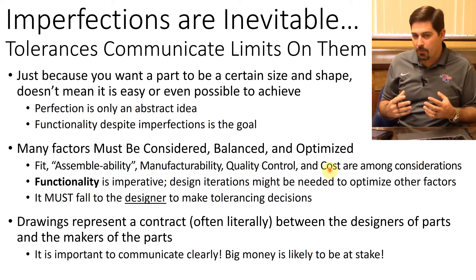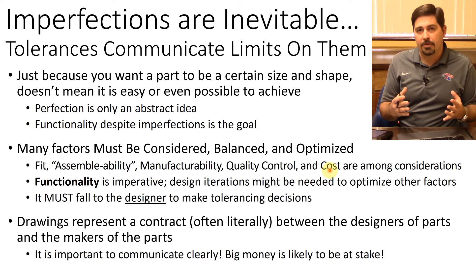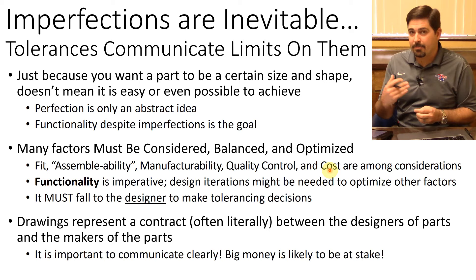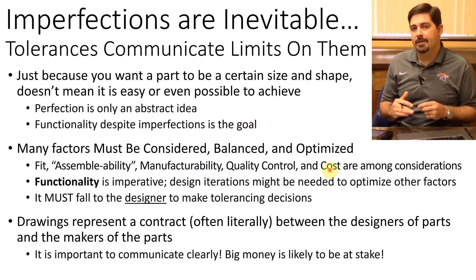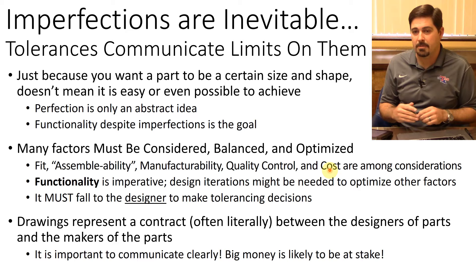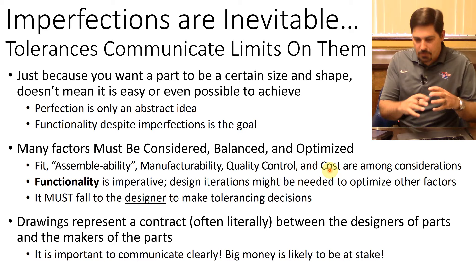Clear communication protects both parties. If you asked for something properly and didn't get it, you have documentation to show it wasn't your fault. But if the documentation trail is missing, you can't reasonably blame the manufacturer — you need clear records showing you specified a particular geometry within certain ranges.